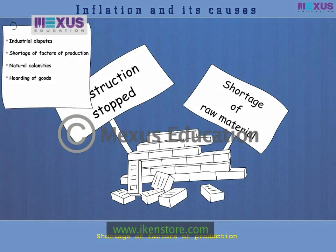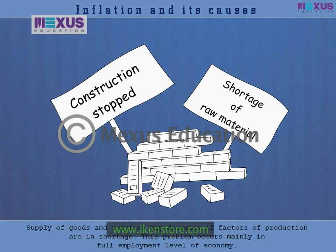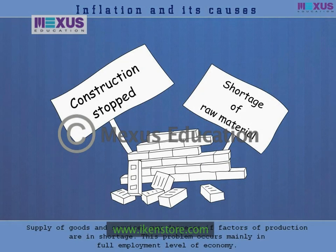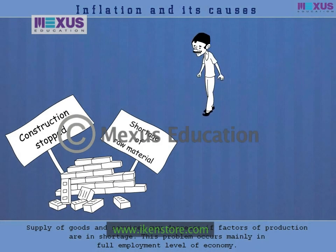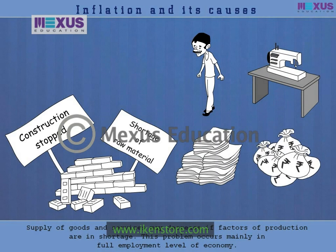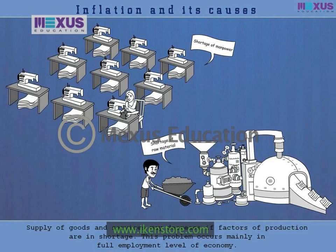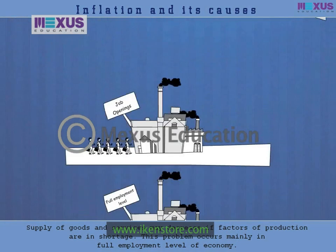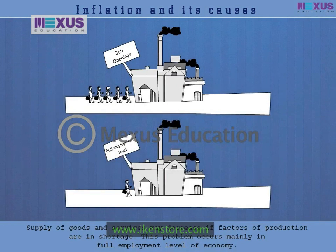Shortage of factors of production: there are several factors of production that contribute to a production process, namely men, machine, material, and money. A shortfall in either of them affects the production process, leading to a reduction in the supply of goods and services. This situation arises when the economy operates at full or near full employment level.